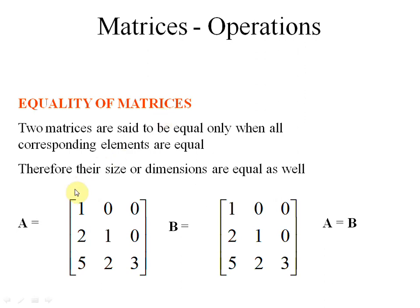What is the condition? All the entries, all the elements should be the same — order should be same, numbers should be same. If there is not a single difference between both matrices, then we can say both matrices are equal.